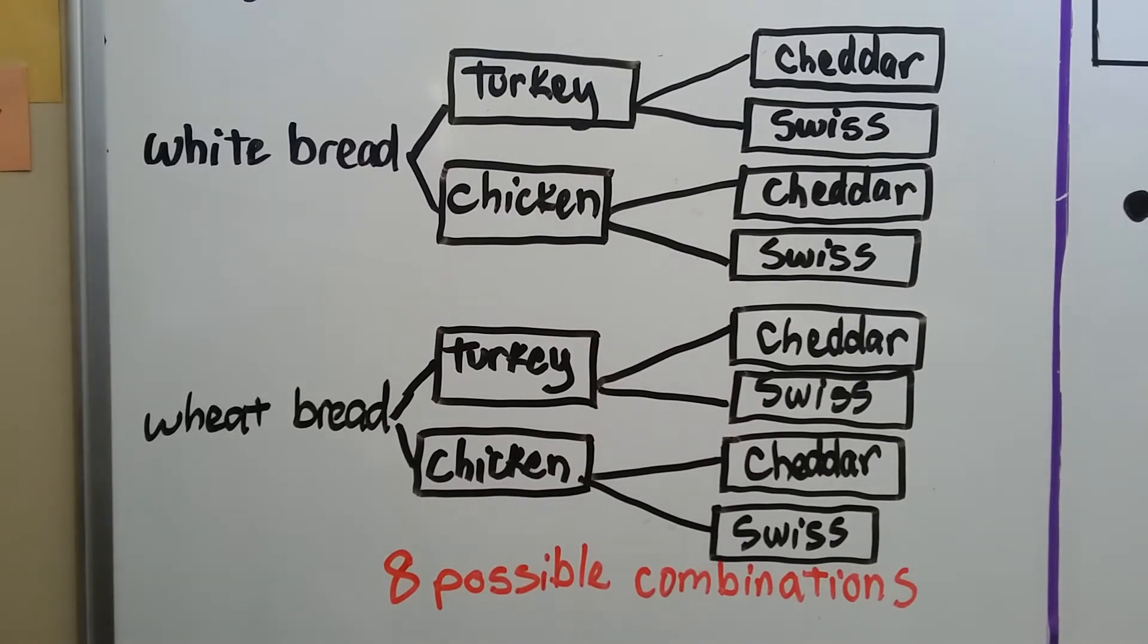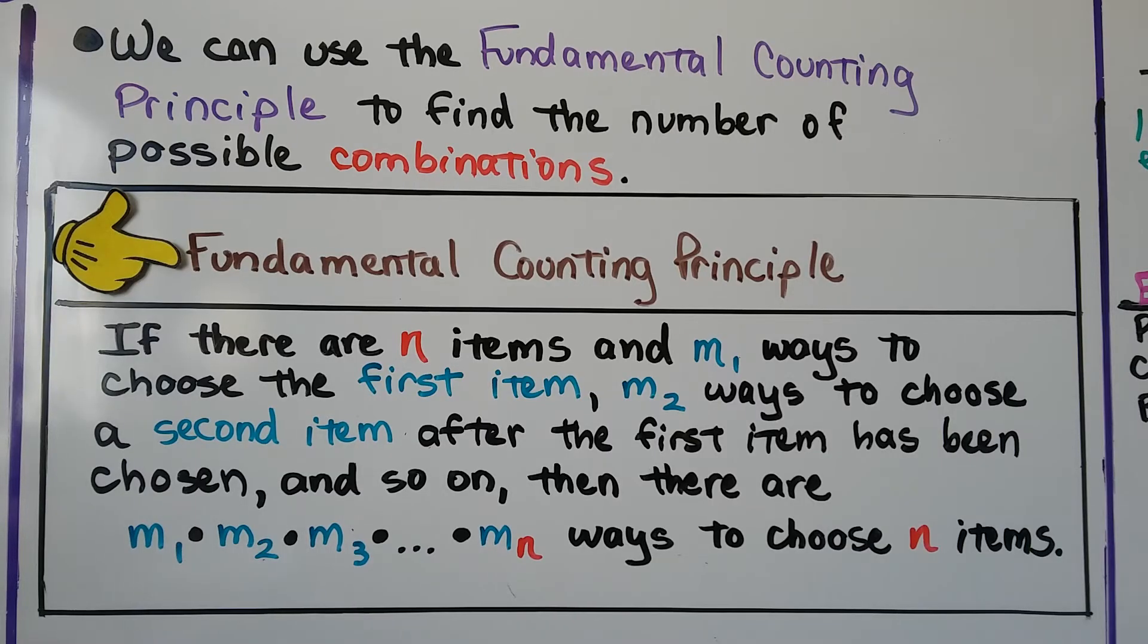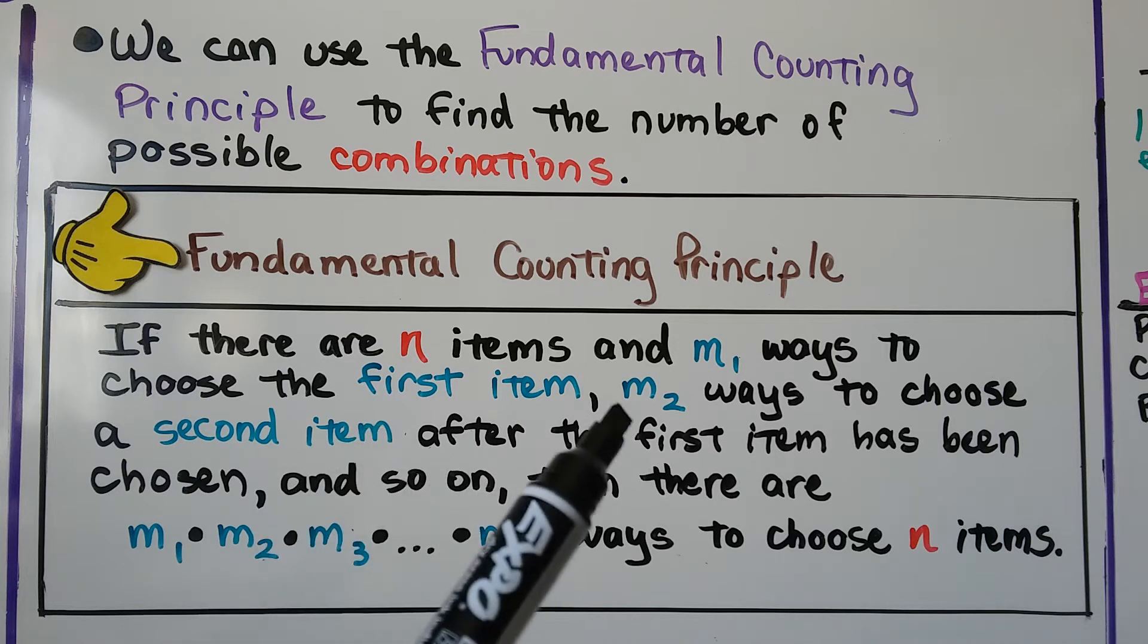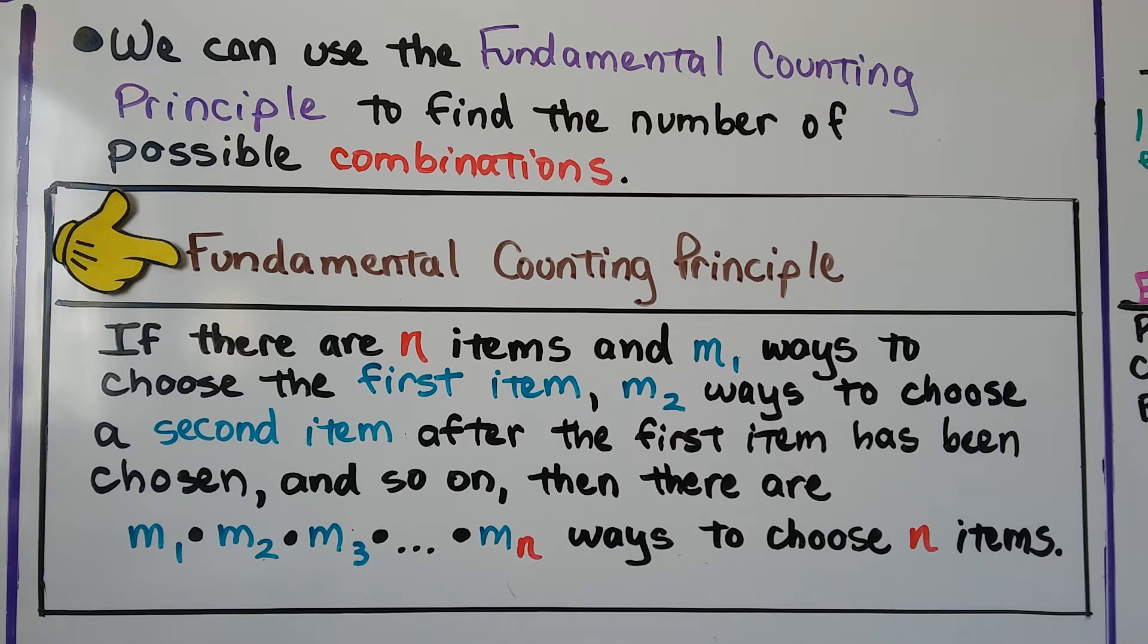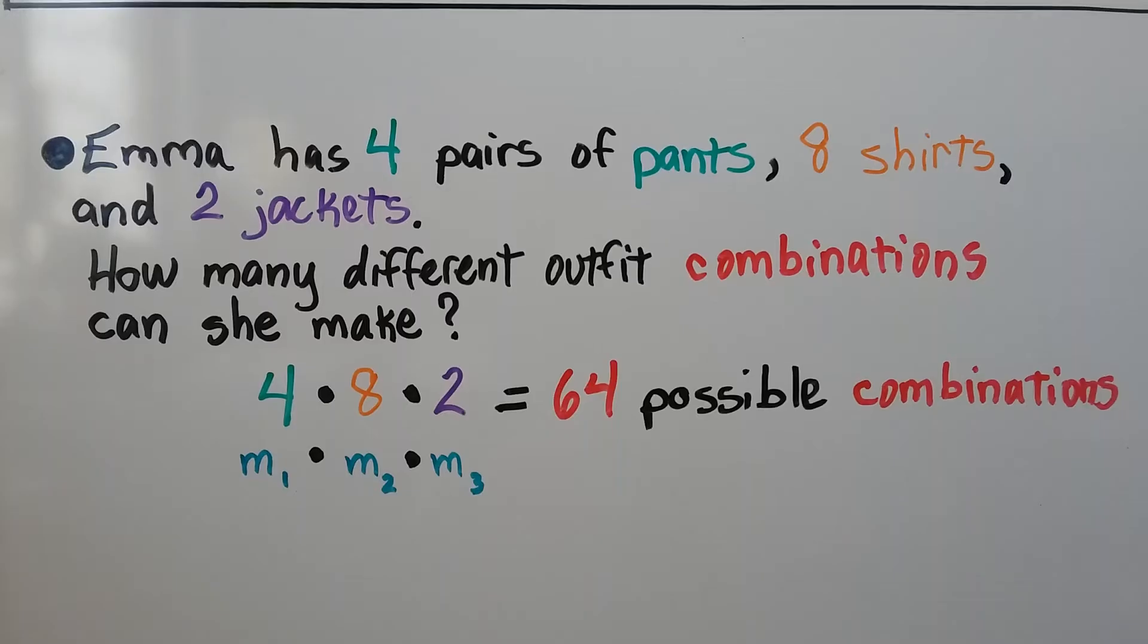But there's an easier way to do this than making a tree diagram. We can use the Fundamental Counting Principle to find the number of possible combinations. For your notes, the Fundamental Counting Principle says if there are n items and m sub 1 ways to choose the first item, m sub 2 ways to choose a second item after the first item has been chosen, and so on, then there are m sub 1 times m sub 2 times m sub 3, and so on, to m sub n ways to choose n items. What does that mean?